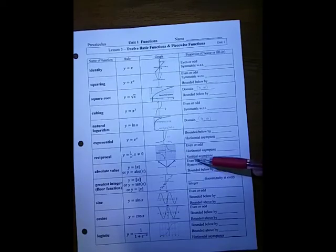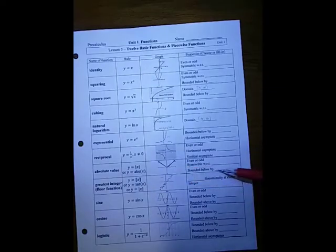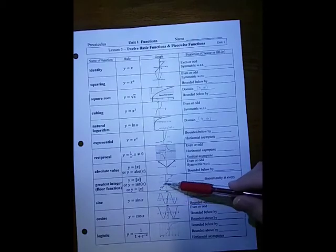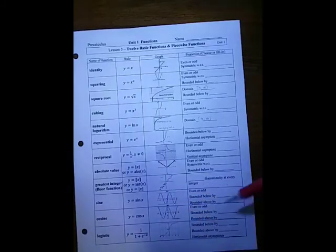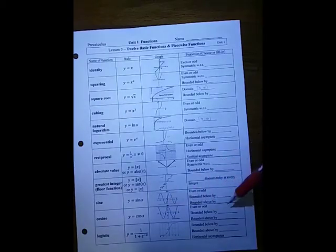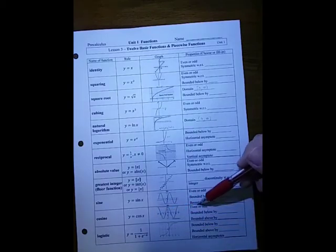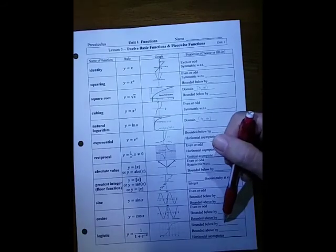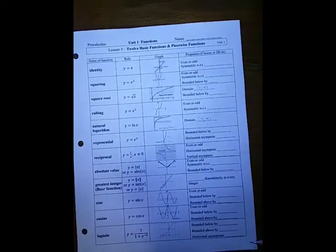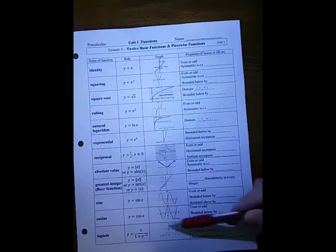The absolute value function is even and symmetric with respect to the y-axis, bounded below by 0. The greatest integer function has a jump discontinuity at every integer. The sine is an odd function bounded below by minus 1 and above by 1. The cosine is an even function, also bounded below by minus 1 and above by 1. The logistic function is bounded below by 0 and above by 1, with asymptotes y equals 0 and y equals 1.